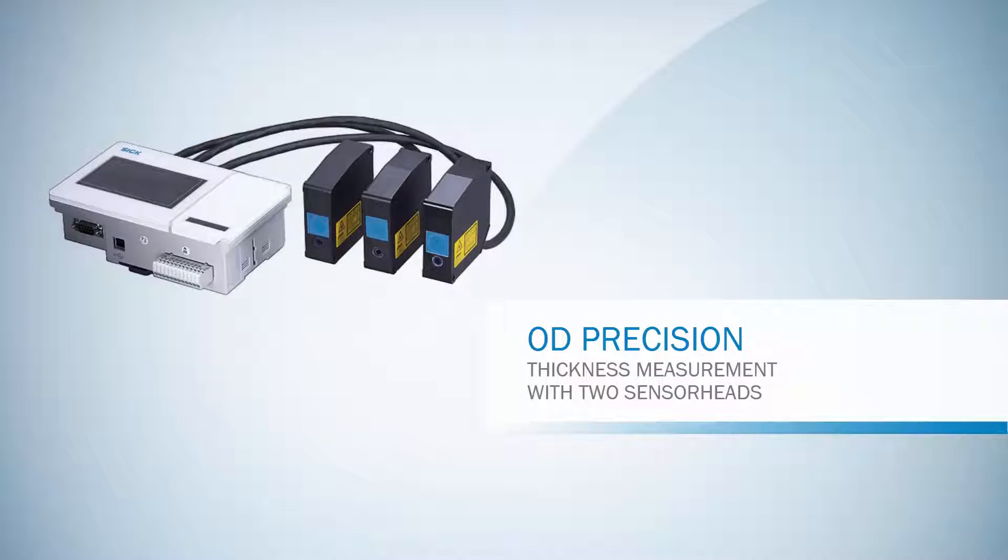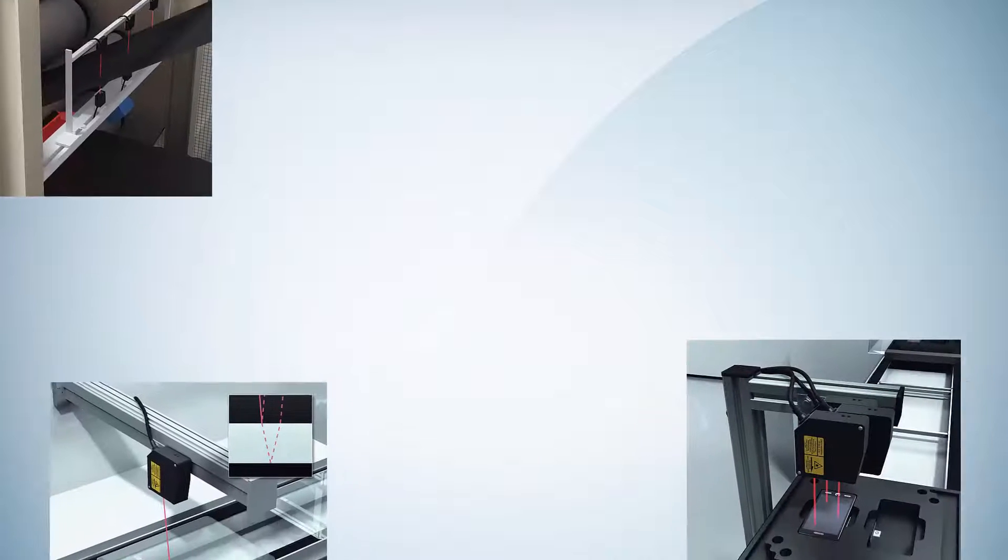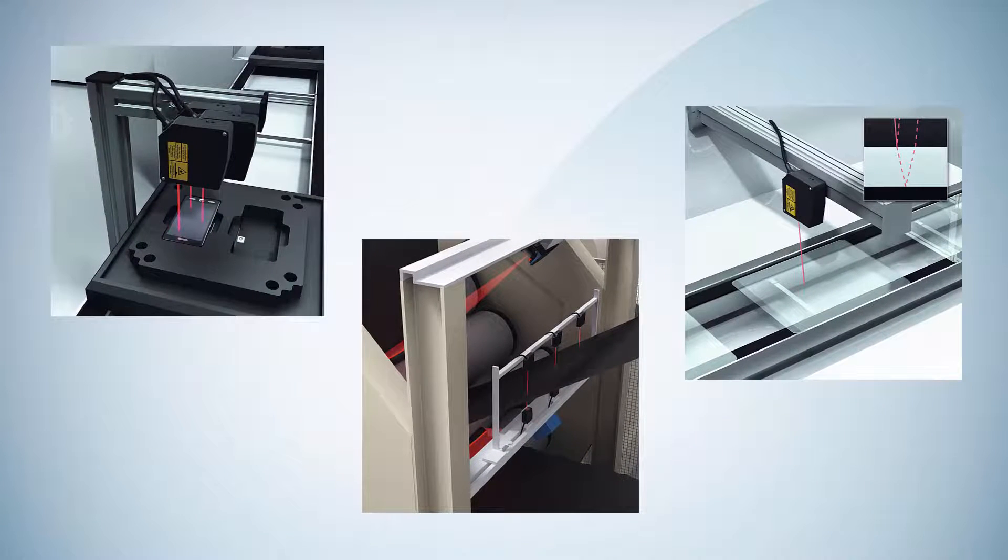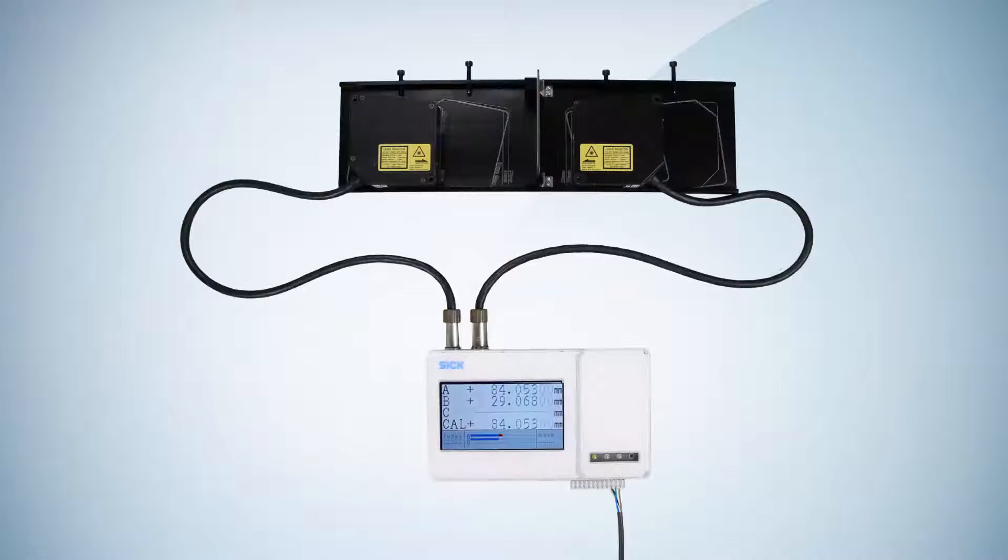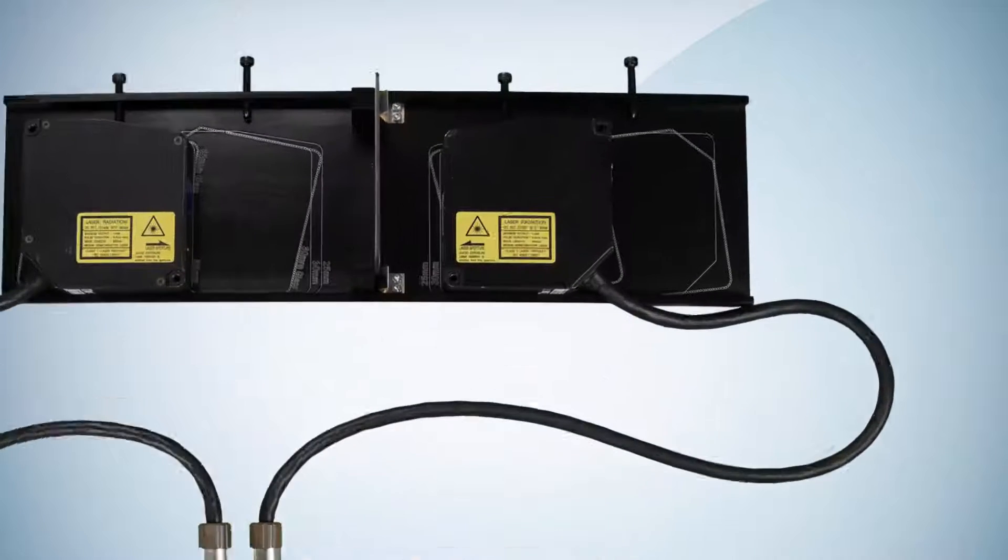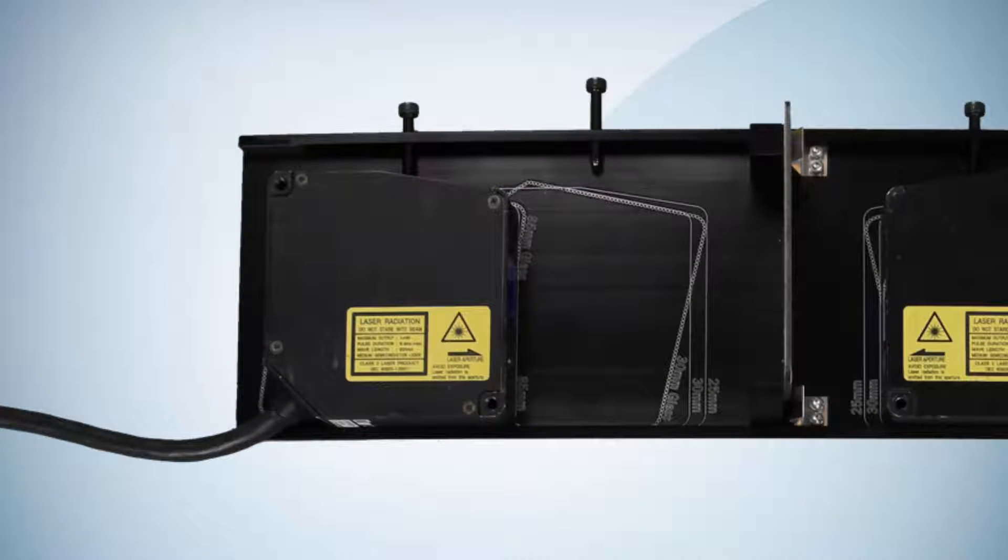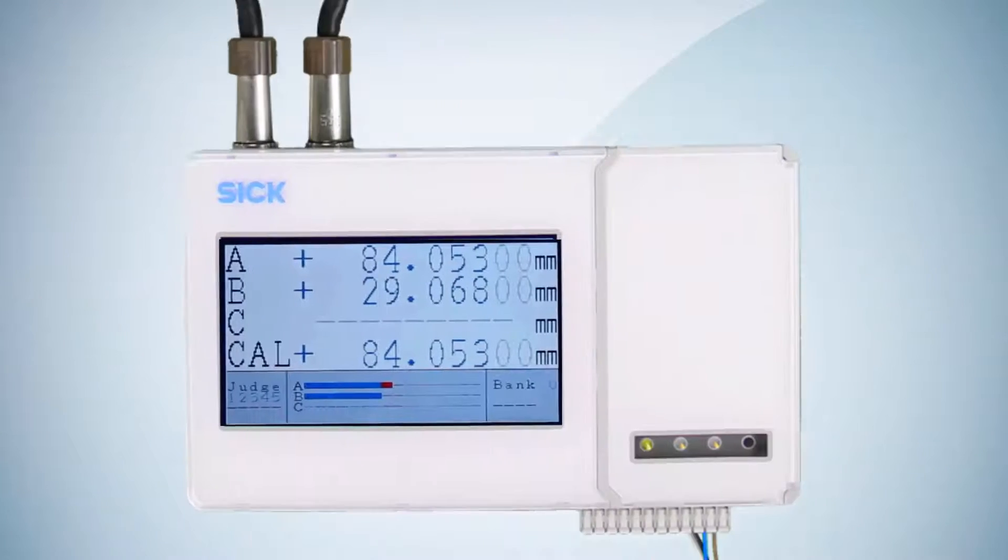Today we will show a thickness measurement with two OD Precision sensor heads from SICK. OD Precision can be used for measuring thickness in many different applications. This is shown by using an OD5-30 and an OD5-85 and the AOD5 evaluation unit.